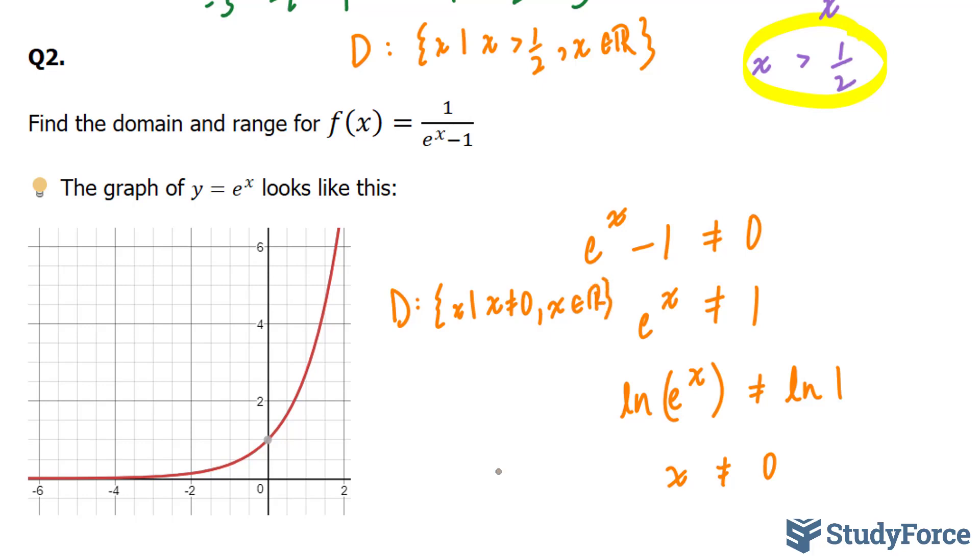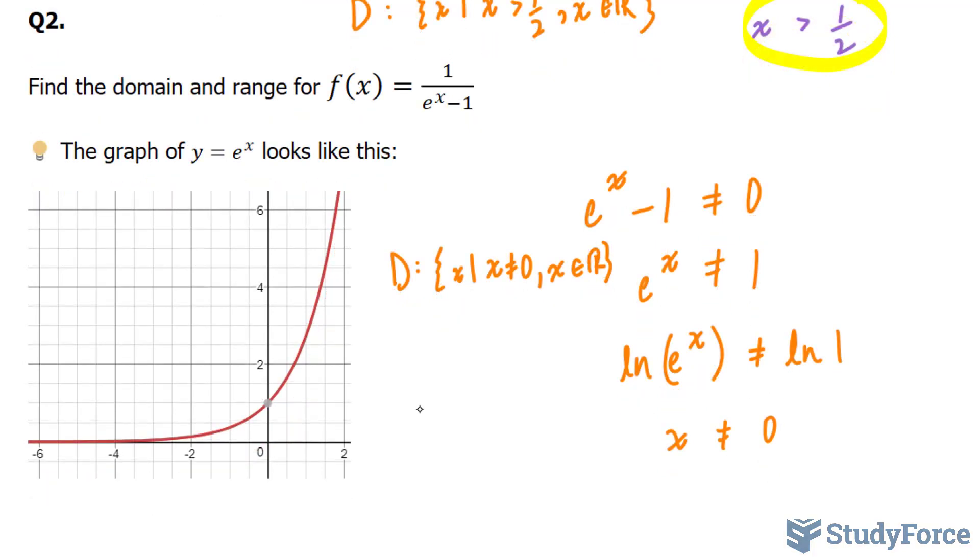Now they're also asking us to find the range. And to do that, let's take a look at the graph that represents y is equal to e to the power of x. You'll notice that in this graph, y never reaches anything less than 0. So what we can conclude with our example is that y can take on any real value that is not 0. So R is y such that y is not equal to 0.